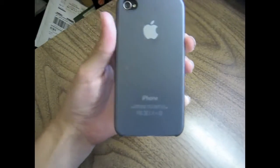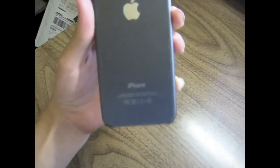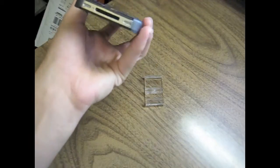Anyways, as you can see, it's a clear case. You can see through it basically. Protects it. Easy to access headphone jack, power button, mic, your mic and your speaker, and your 30 pin dock connector.